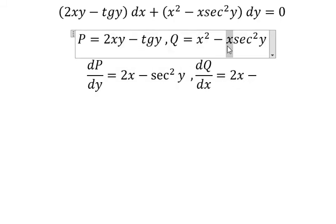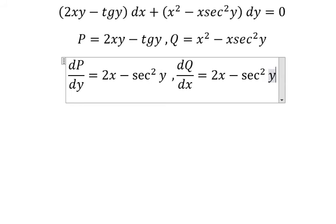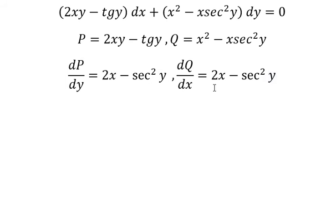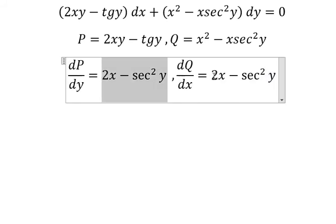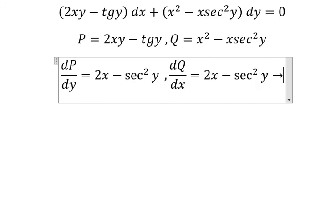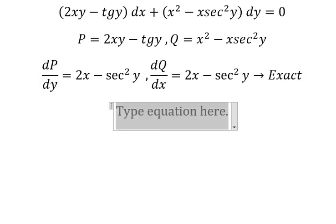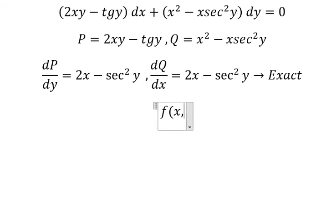This one we have number 1. So we have secant of Y squared. Now we see that this one is equal to this one. That means it is exact.